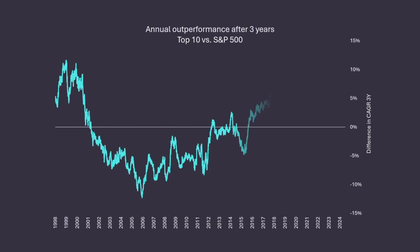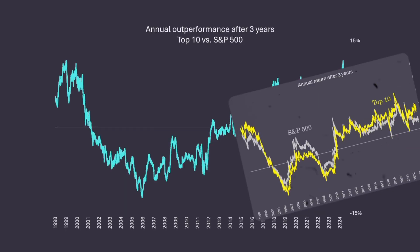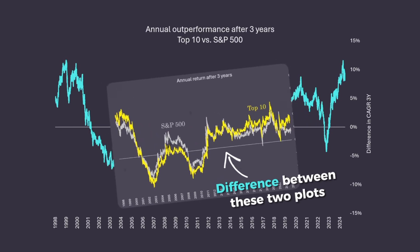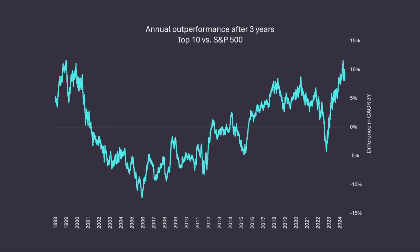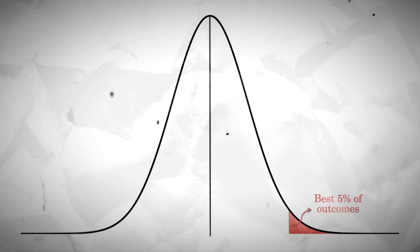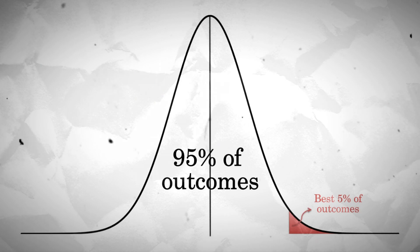We can also plot the difference in three-year annualized return between our top 10 index and the S&P 500 to notice something interesting. The most recent three-year outperformance of the top 10 is within the five percentile of our historical data, meaning that more than 95% of the time, the outperformance has been lower or negative.